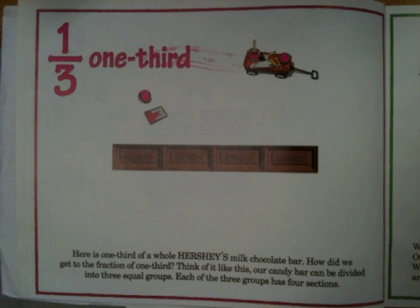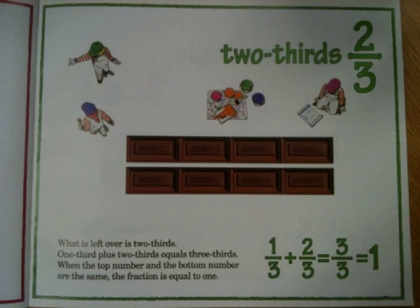One third. Here is one third of a whole Hershey's milk chocolate bar. How did we get to the fraction of one third? Think of it like this: our candy bar can be divided into three equal groups, and each of the three groups has four sections. Two thirds. What is left over is two thirds. One third plus two thirds equals three thirds. When the top number and bottom number are the same, the fraction is equal to one.